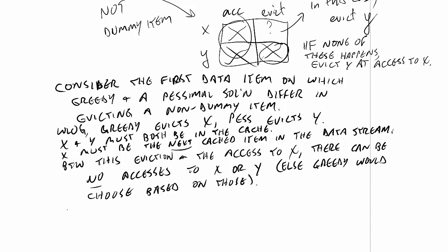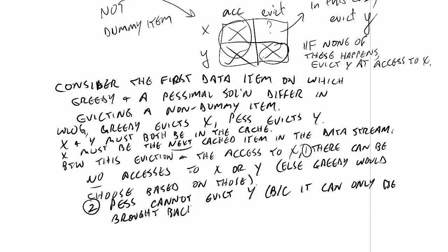Between this eviction and the access to x, that is that very next access, there can be no accesses to x or y. Else greedy would choose based on those. So we've taken care of these two entries in our table. We need to take care of this one. Pessimal cannot evict y because it can only be brought back in on an access to y.